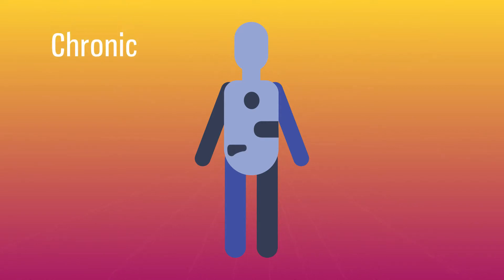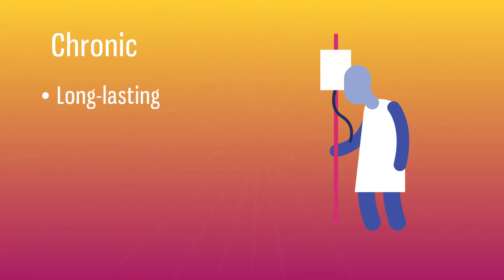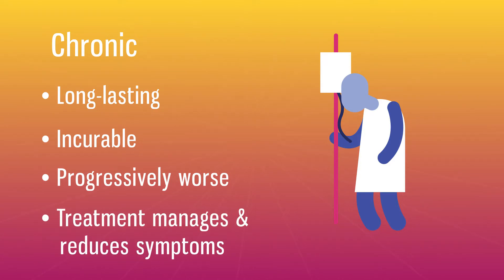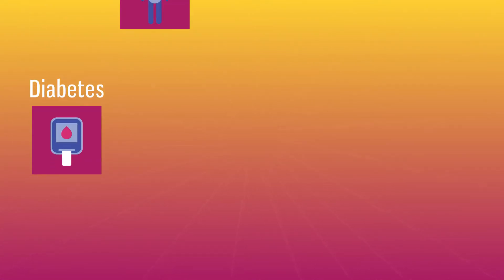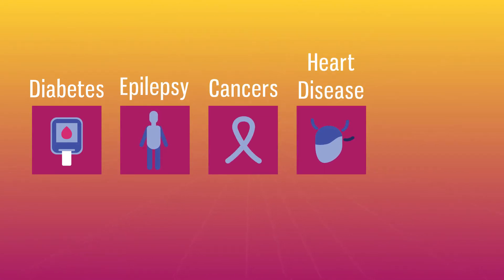Diseases can be chronic or acute. Chronic diseases are long-lasting, often incurable, and get progressively worse over time. Medical treatment focuses on managing the disease to slow it down and reduce symptoms. Examples of chronic diseases include diabetes, epilepsy, most cancers, heart disease, and arthritis.